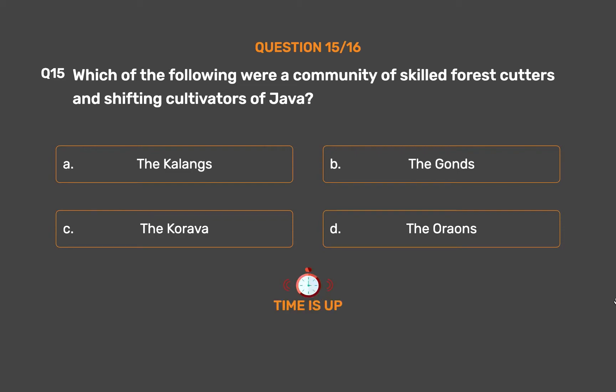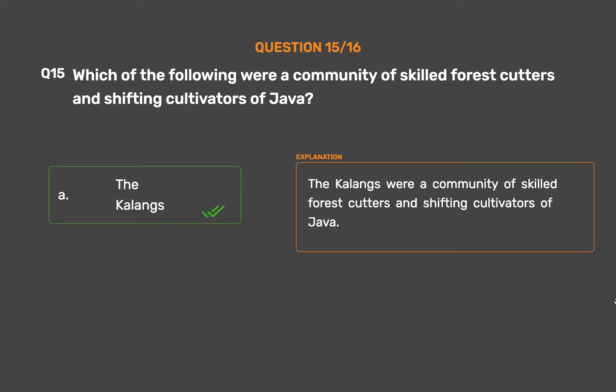The correct answer is Option A, The Kalangs. The Kalangs were a community of skilled forest cutters and shifting cultivators of Java.